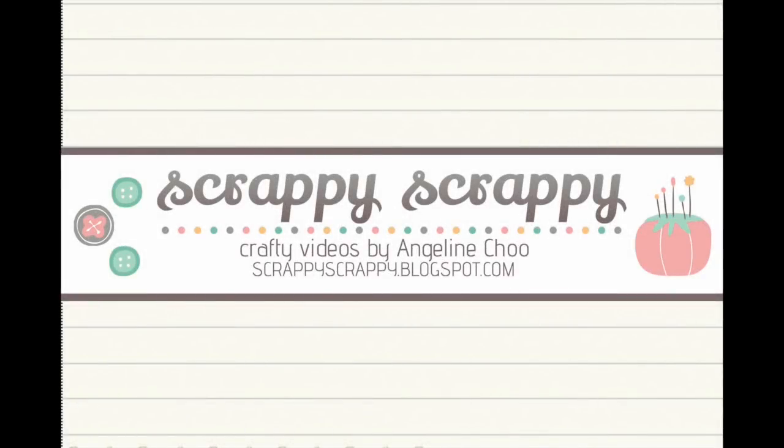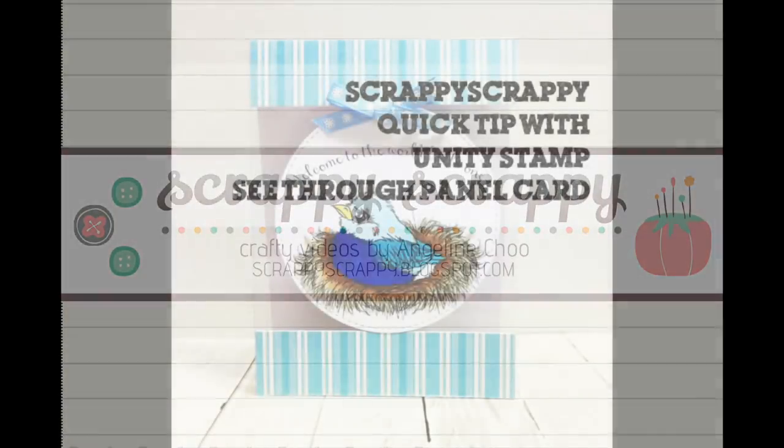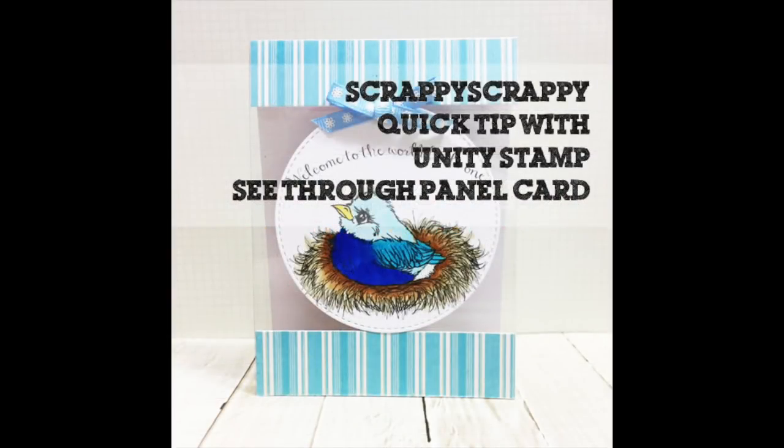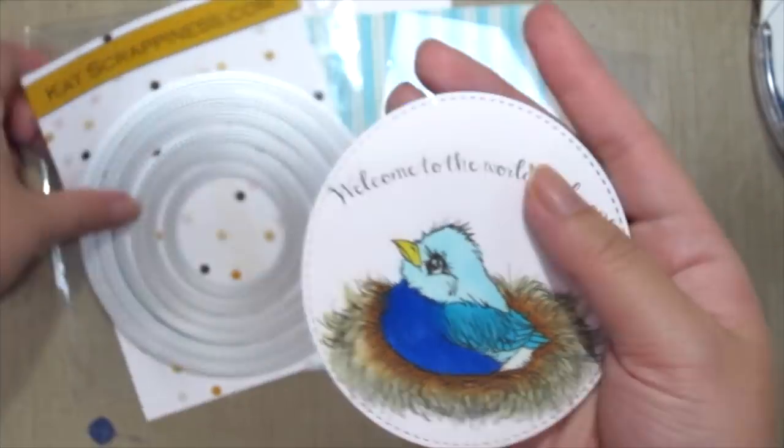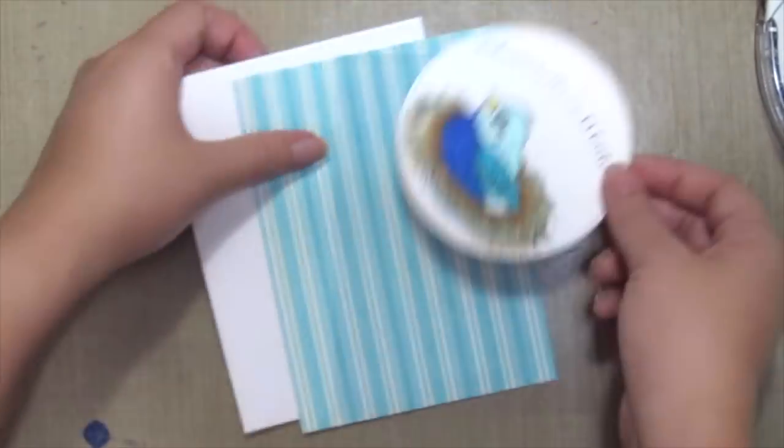Hi, it's Angeline here. I have a fun quick tip technique for you today, and I'm going to do a see-through panel card. I've already stamped and colored this beautiful birdie and cut it using the Cat Scrappiness circle die.